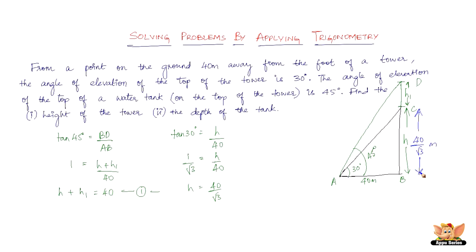That's done — the height is 40/√3 meters. On solving, we can write 40/√3 as 40√3/3, because we multiply and divide by √3: 40/√3 becomes 40√3/(√3 × √3) = 40√3/3, which is approximately 23.1 meters. So the height of the tower is 23.1 meters.